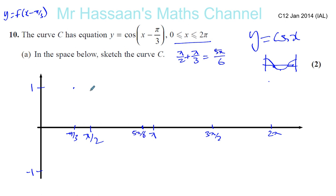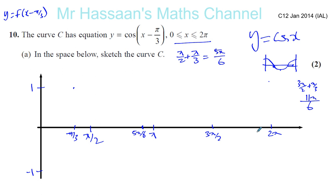It's going to go down from there. Normally it hits minus 1 at 3 pi over 2, but now it's going to be pi over 3 more than 3 pi over 2. So we have 3 pi over 2 plus pi over 3 — that's 9 plus 2 over 6 — which is 11 pi over 6, less than 2 pi. So it hits minus 1 at 11 pi over 6. Then it comes back up toward 0.